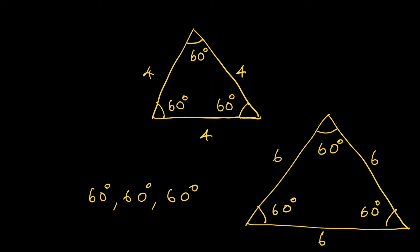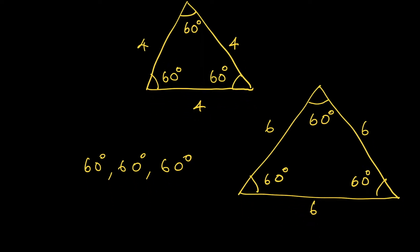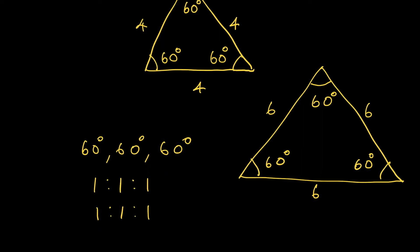Now when you look at the side lengths — in one case the side lengths were 4, 4, and 4; in the second case it was 6, 6, and 6. When we took a similar triangle to the original, the ratio of the sides did not change. Initially the ratio of side lengths was 1:1:1 because they were all 4, and in the second case also the side lengths are 1:1:1. So the summary is: if you take a triangle with all angles being 60-60-60 degrees, the ratio of the sides will always be 1:1:1. Now let's take another simple case — an isosceles right-angled triangle.